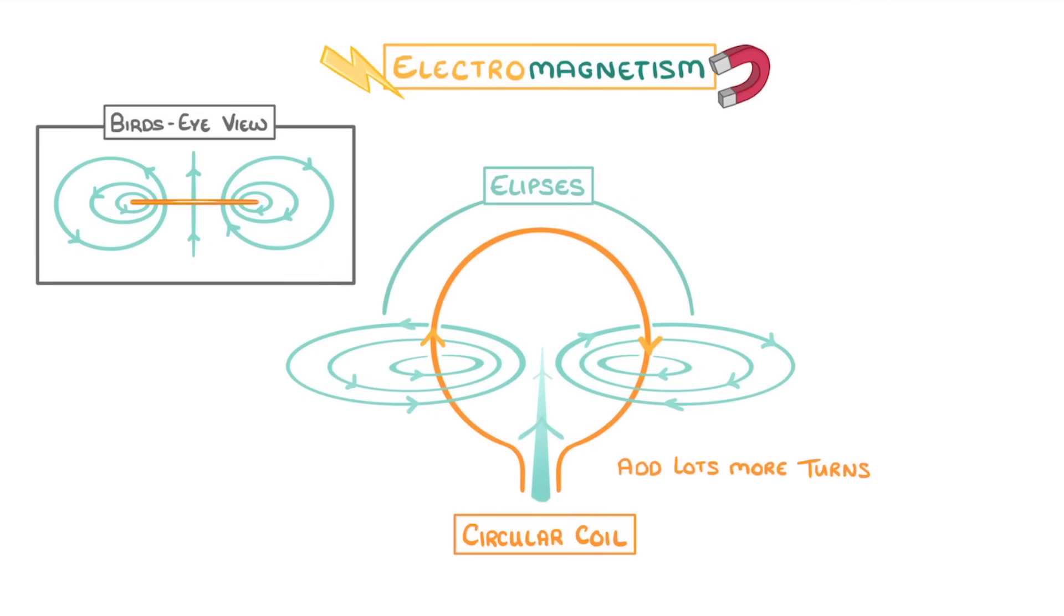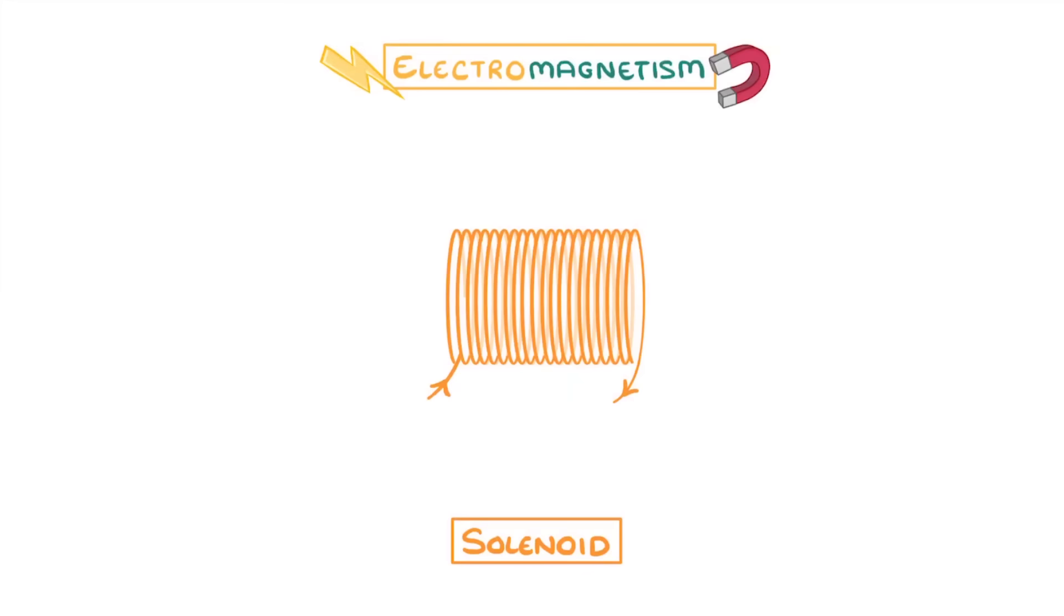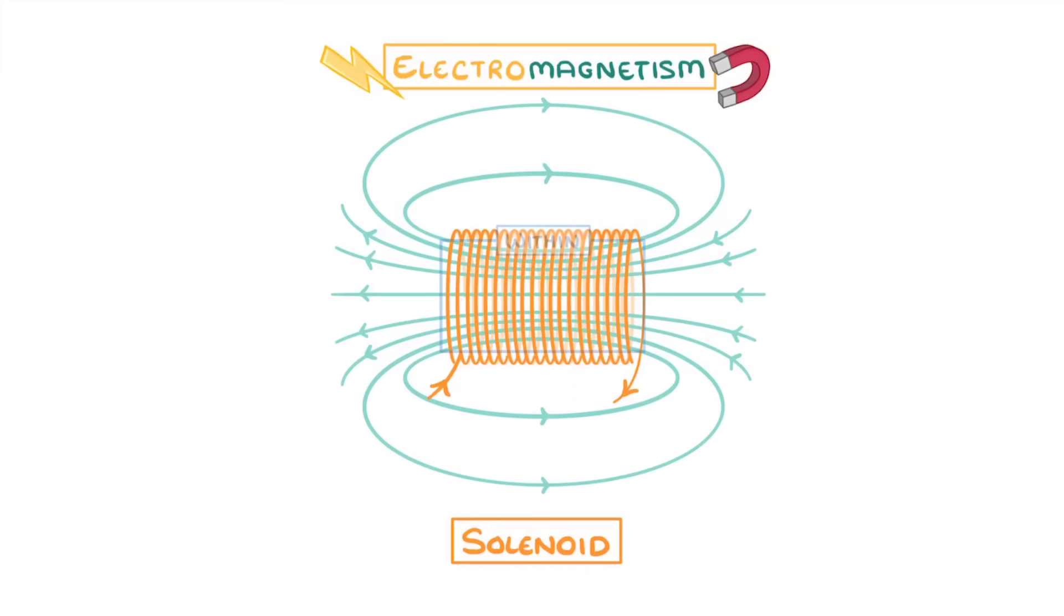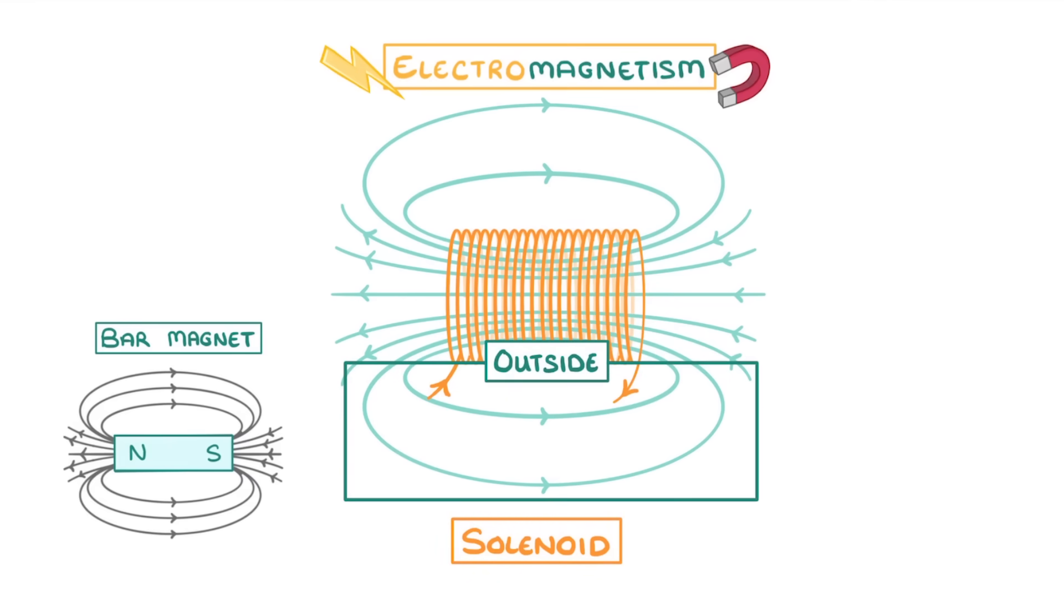If we now add lots more turns to our coil, all next to each other in one long piece of wire, we make something called a solenoid. And importantly, the magnetic field within a solenoid is strong and uniform. Outside the coil, the field is just like the one we'd find around a bar magnet.